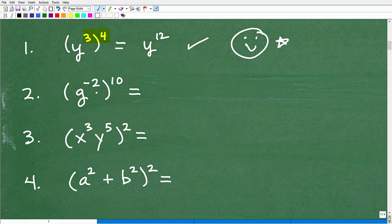We don't want to get overconfident here because we want to continue to practice. So what about this next problem? We've got g to the negative 2 power to the 10th. So does this rule work with negative numbers? Yes, it works with fractions. It works with anything. So this is going to be g to the negative 2 times 10. So that would be g to the negative 20th power. So if you got that correct, give yourself a checkmark.